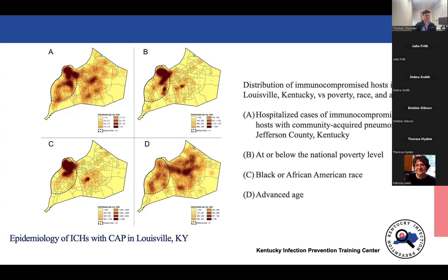We hypothesize that hospitalization rates may be influenced by racial and other socioeconomic factors in Jefferson County. One caveat is that this data is ecological, so other factors we couldn't account for are at play. Still, it is interesting to show the relationship between poverty and race and their connection to hospitalization due to pneumonia in immunocompromised hosts.